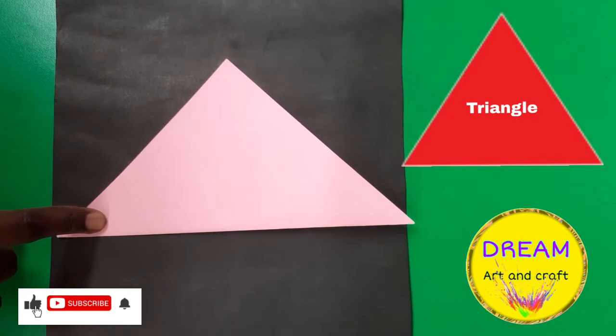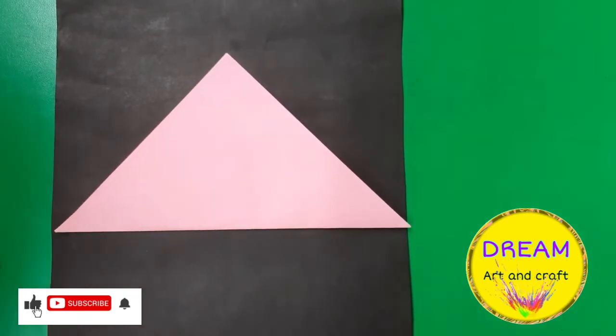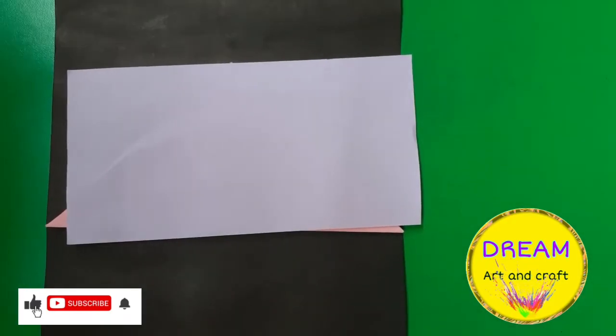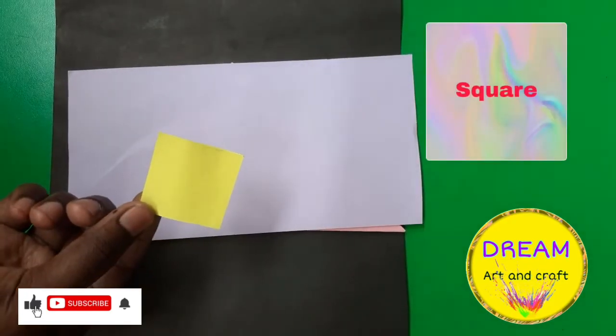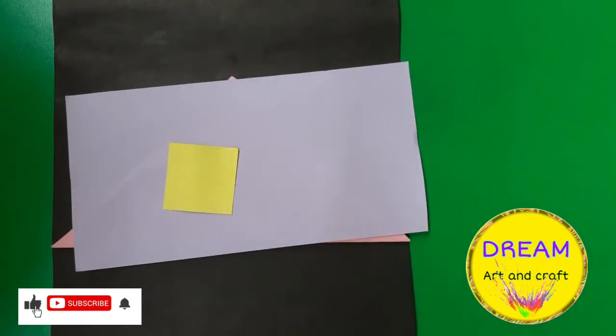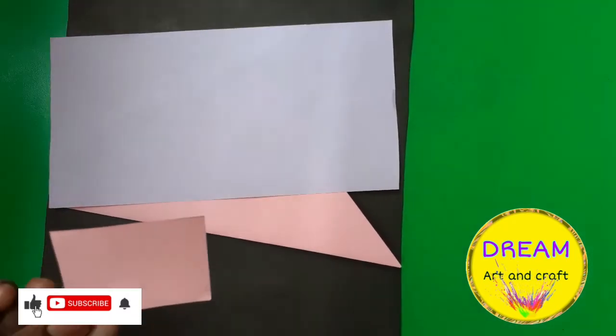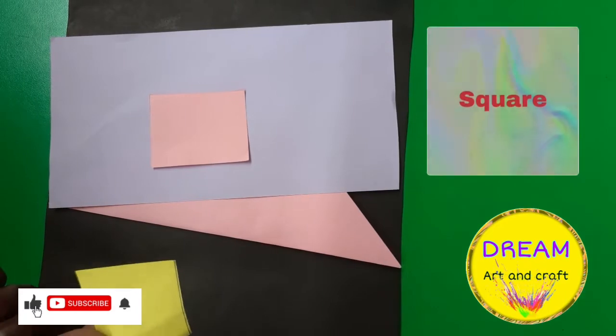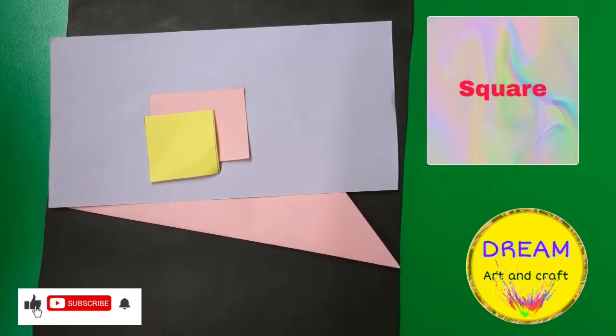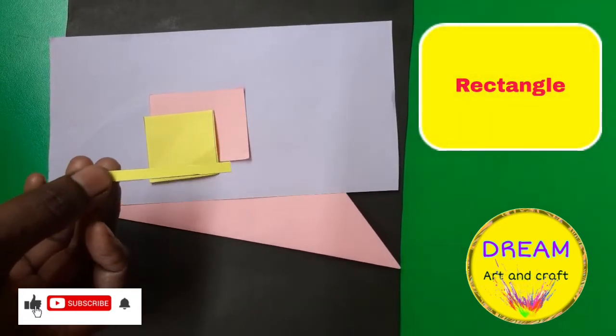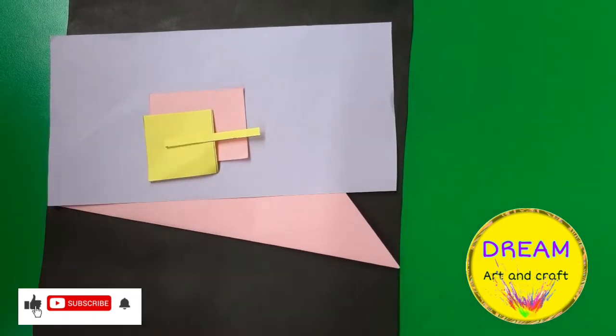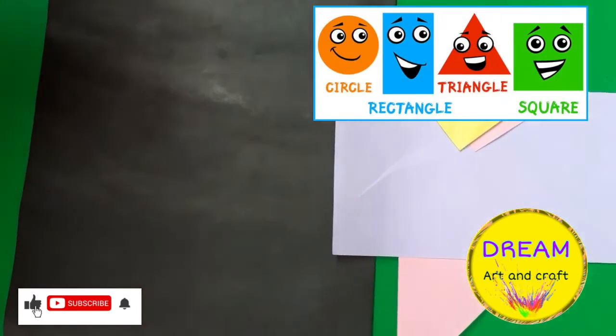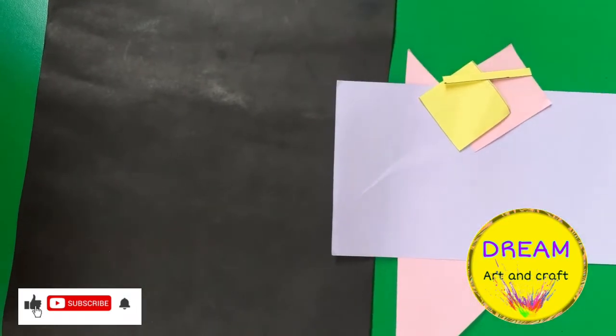What shape is this? Triangle. What shape is this? Rectangle. What shape is this? Oval. Very good. What shape is this? Rectangle. What shape is this? Oval. Very good. Now we can do the house with these shapes. Can we start?